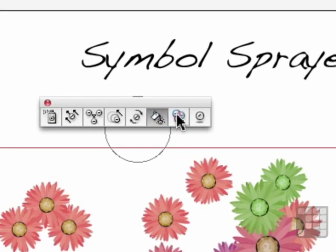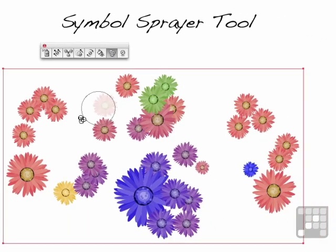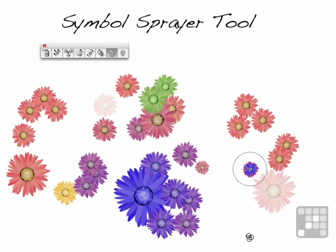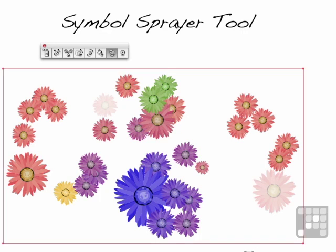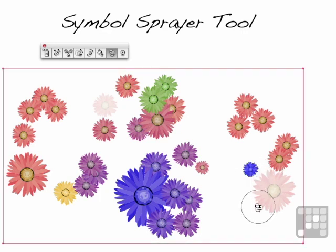The next button over is called the Symbol Screener, and what it does is begin to make them semi-transparent. If you click too long, you make them semi-gone — zero opacity. Hold the Alt key to bring them back. So we can start making them transparent.